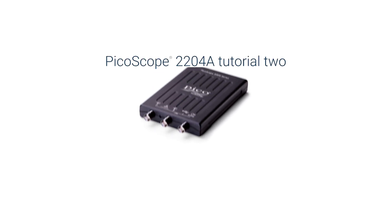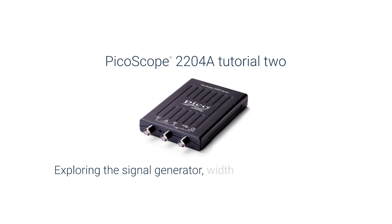Welcome to part 2 of the PicoScope 2204A tutorial. In part 1, we set up a 1 kHz square wave using the signal generator and used it to compensate a x10 probe.